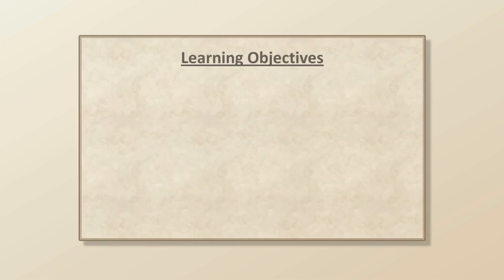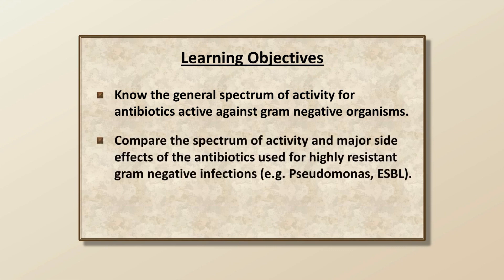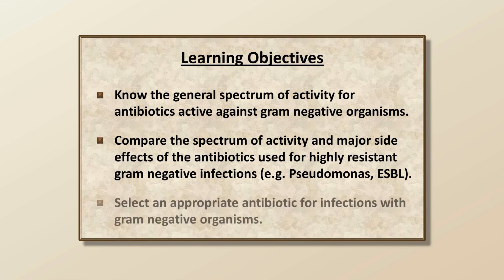The learning objectives are: first, to know the general spectrum of activity for antibiotics against gram-negative organisms; second, to be able to compare the spectrum of activity and major side effects of the antibiotics used for highly resistant gram-negative infections, such as those by Pseudomonas, ESBL, Acinetobacter, and Stenotrophomonas; and last, to be able to select an appropriate antibiotic for infections with gram-negative organisms.